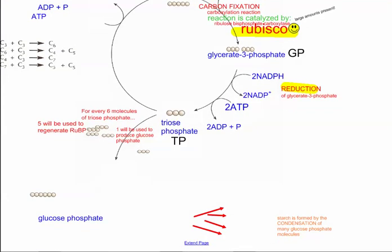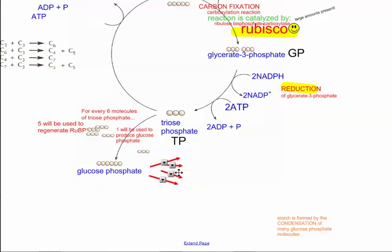And then eventually, down here, these extras will be accumulated and turned into glucose phosphate. And then the glucose phosphate can form together. This is just a simple condensation reaction where glucose molecules combine to form starch. So that's basically it.